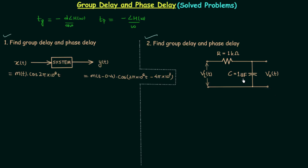Let's start the solution of the first problem. In the first problem there is a system with input x(t) and output y(t). The input x(t) is equal to m(t) cos(2π × 10⁶ t) and the output is equal to m(t − 0.4) cos(2π × 10⁶ t − 4π × 10³).